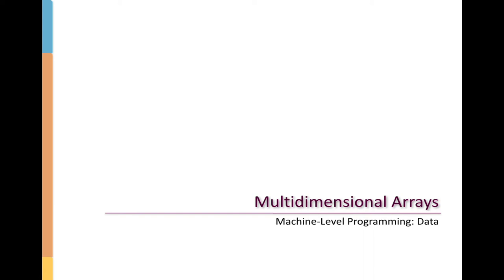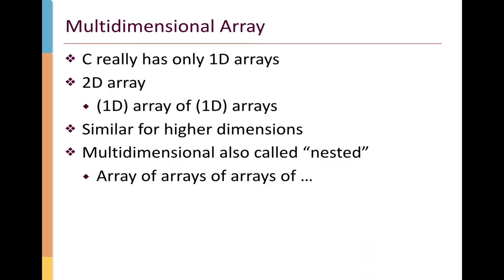Let's take a look at multidimensional arrays. It turns out that C doesn't really have any such thing as a multidimensional array — it has only one-dimensional arrays. A two-dimensional array is really just a one-dimensional array of one-dimensional arrays, where each element in that top-level array is itself an array. We can work similarly for higher dimensions, with arrays of arrays of arrays and so forth.